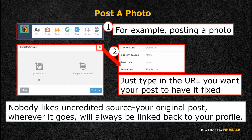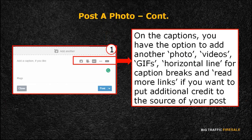There are also post date and text editor options. On the captions, you have the option to add another photo, videos, GIFs, a horizontal line for caption breaks, and read more links if you want to put additional credit to the source of your post. Finally, tagging — this is important. Your traffic in Tumblr also depends on the tags you've given to your post.